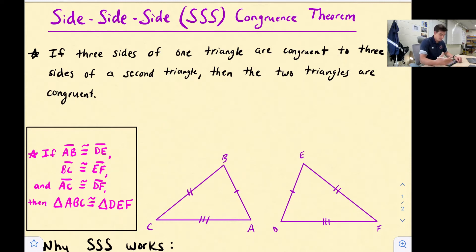It seems pretty self-explanatory, but we also have to keep in mind the angle measures need to be the same for our triangles to be congruent. So I'm going to show you an example of Side-Side-Side and then also why it works.